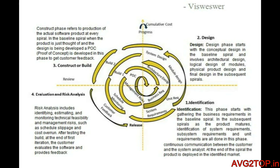The first phase in the spiral is identification. Here, information is gathered depending upon the customer's needs, along with information about the product and system requirements. There is continuous communication between the customer and the system analyst, where a unit request, business request, or system request is initiated.